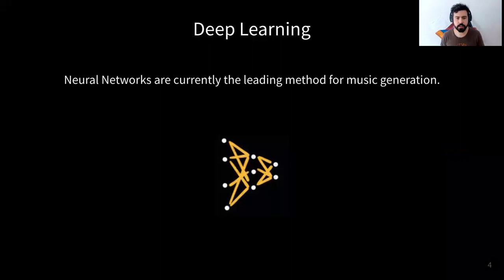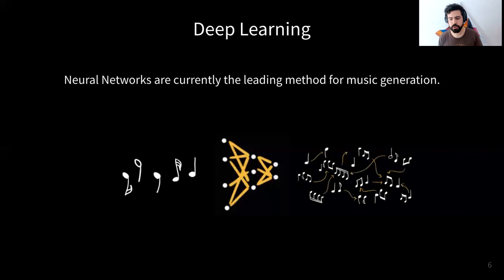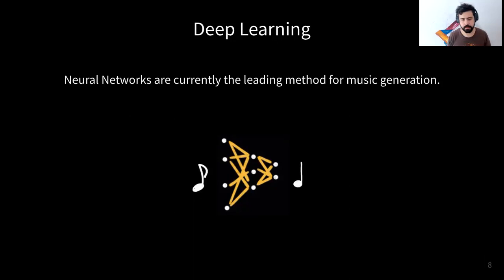I want to introduce this talk by saying that neural networks are currently the leading method for music generation. Briefly, how they work is: you give these networks a bunch of examples of music pieces and they learn compositional rules that you can later use to generate music. You give a certain note as input and then the network predicts the next note in the sequence. By doing that many times you can get a complete piece.